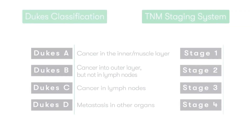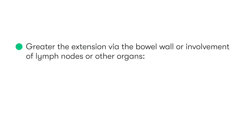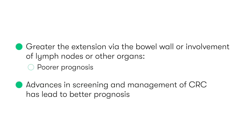The equivalences between the TNM and Dukes system can be seen in this table, so this might be a good time to pause the video and get better acquainted. The point to note is that quite logically, the further the colorectal cancer has spread into the bowel itself, or into lymph nodes and other organs, the poorer the patient's prognosis. However, somewhat reassuringly, advances in our screening and management of colorectal cancer have led to significant improvements in the five-year prognosis of patients with the condition, so we're definitely moving in the right direction.